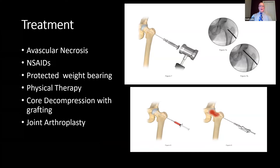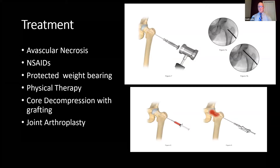I do not do hip arthroscopies, but we have one of our partners that does. For avascular necrosis, we treat with NSAIDs, protective weight-bearing, and physical therapy. If there's no collapse, possibly a core decompression with grafting. The diagrams depict one percutaneous method of core decompression — not using a drill, so there's less damage to the bone. We'll also do a bone marrow aspiration and inject that up into the necrotic tissue, then backfill it with calcium phosphate material that helps strengthen the area.